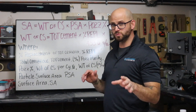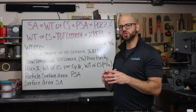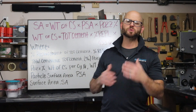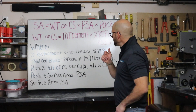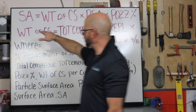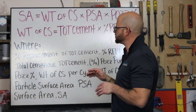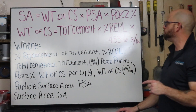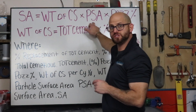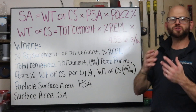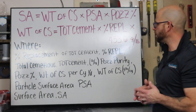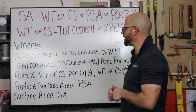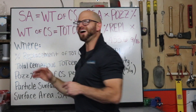This also assumes you've got a fairly narrow particle size distribution. You could do the calculation with a wider distribution, but it's not going to be as accurate. The instantaneous silica surface area is equal to the weight of dry colloidal silica multiplied by the particle surface area and the percent purity of that silica. For colloidal silica, pozzolanic purity is normally 99% or higher, unless you have some type of modification.